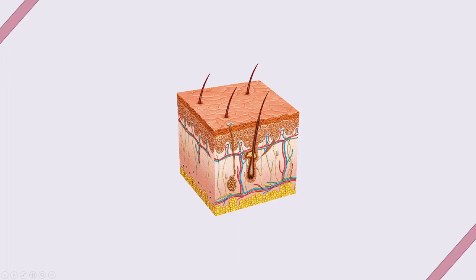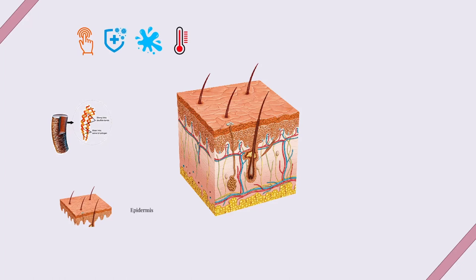To summarize, keratinization happens in the skin. The skin has four main functions: sensing, protection, secretion, and temperature regulation. It also has keratin in its structure to help provide strength. There are three main layers of the skin — the epidermis, the dermis, and the subcutaneous layer — and the epidermis can be further divided into five layers.